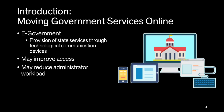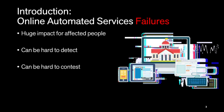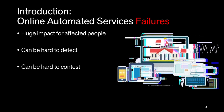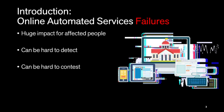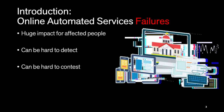E-Government is the move to provide state services through the internet or leveraging other information technology. This has the potential to do great things like improving access to government services and reducing administrative workload. However, automated services can fail, which has a huge impact for affected people and can cut off access to vital resources. These failures can be hard to detect because people tend to rely on information provided by the government, and can be hard to contest as isolated complaints may not trigger an investigation.